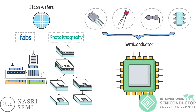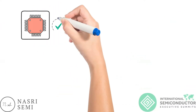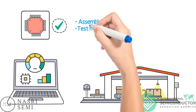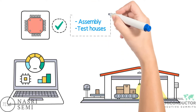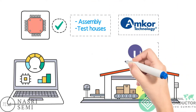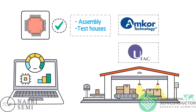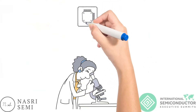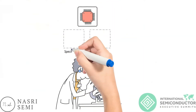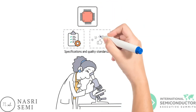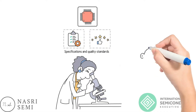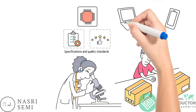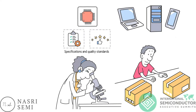Once the semiconductors are fabricated, they are then tested and packaged by companies called Assembly and Test Houses, like Amcor, UTAC, and ASC. They test the semiconductors to ensure they meet the specifications and quality standards, and then package them in a way that makes them easy to integrate into electronic devices.